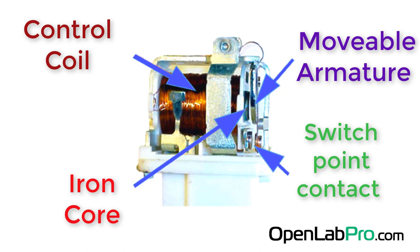The switch point contact is the conducting part of the switch, which opens or closes the circuit. The relay has a spring that helps to move the armature to its original position.